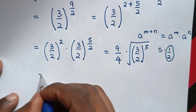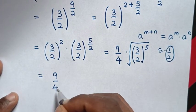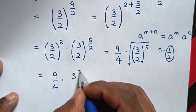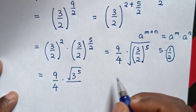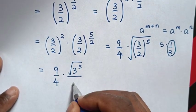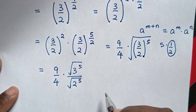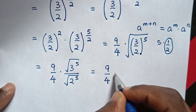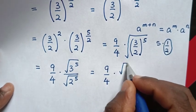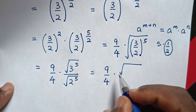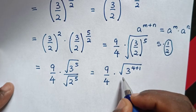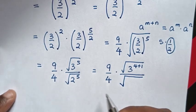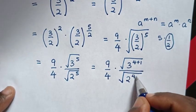Then in the next step, it will be equal to 9 over 4, times: square root of 3 power of 5, over square root of 2 power of 5. Then, 3 power of 5 is same as 3 power of 4 plus 1, over 2 power of 5 is same as 2 power of 4 plus 1.